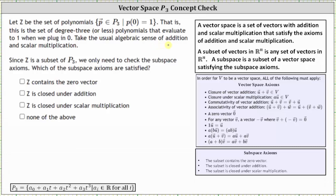So to begin, because we know the polynomials in set Z are in P3 but are equal to 1 when the input is 0, all the polynomials in the subset Z must be in the form of P(t) equals 1 plus a₁t plus a₂t² plus a₃t³. Notice when t is 0, the function value or polynomial is equal to 1.